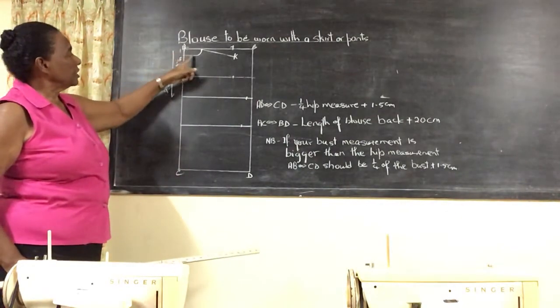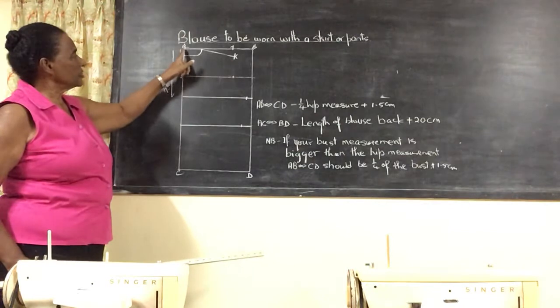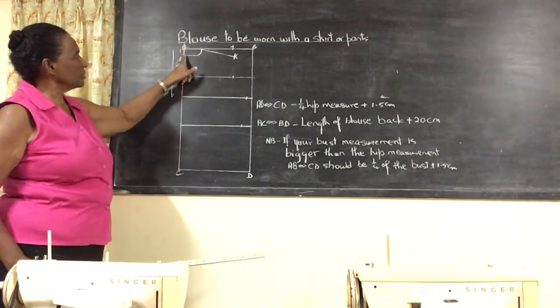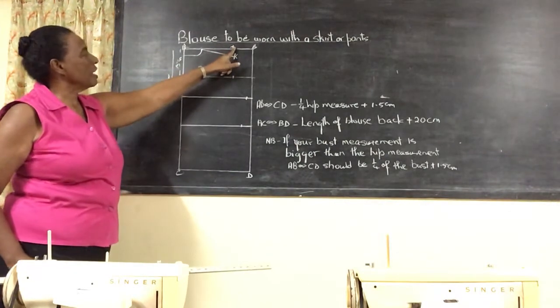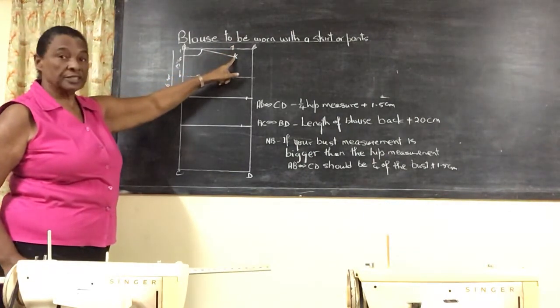Then you put in your neckline: 7 centimeters across, 3 centimeters down. Half your shoulder measurement plus 1.5. Then you come down for point K, which is 4 centimeters.